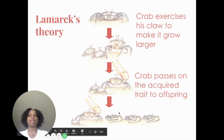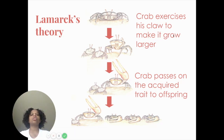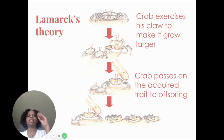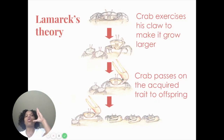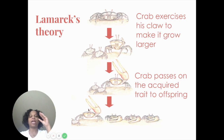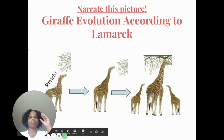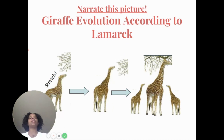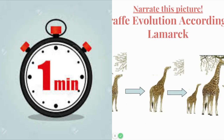Let's put Lamarck's theory in action. We have a crab exercising its claws to make them grow larger — exercising and exercising — and then his claw becomes huge. Because he was exercising so much, his claw grew, and now he is going to pass on this acquired trait to his offspring. Based on this crab example, I want you to take one minute and write down the giraffe evolution.